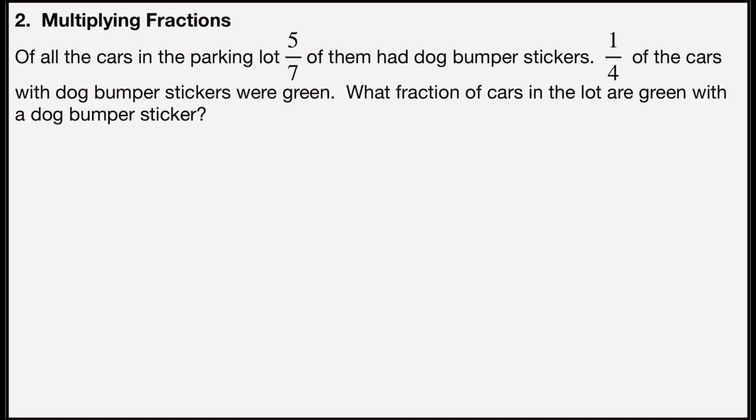So we know that five-sevenths of the cars in the parking lot had the dog bumper stickers, and this is the part that tells you to multiply. It says one-fourth of the cars with the bumper stickers are green, and it wants to know which are green with the dog bumper stickers.